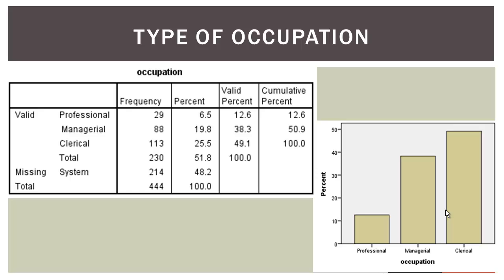Let's start with type of occupation. You can see it has three categories: professional, managerial, and clerical. So it's a categorical variable with just a limited number of categories. To describe the distribution of a categorical variable, we would look at the frequency table and the percentage bar chart.